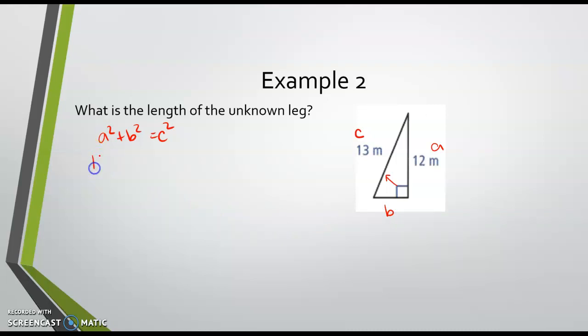So when I plug in, I use that substitution property. I get 12 squared plus b squared equals 13 squared. And so then 12 squared is 144 plus b squared equals 169.